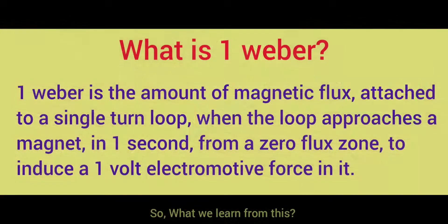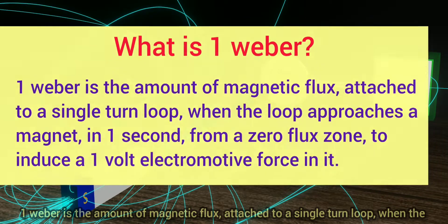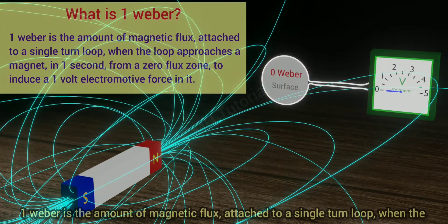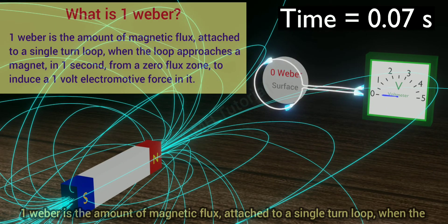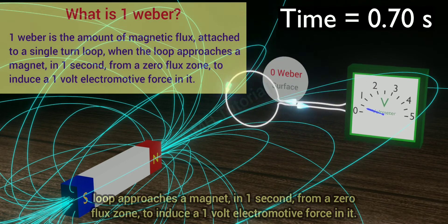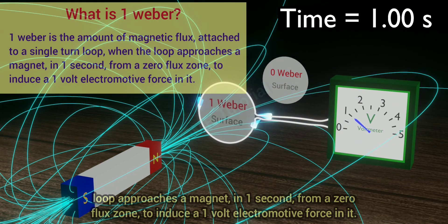So, what we learn from this? One Weber is the amount of magnetic flux attached to a single turn loop, when the loop approaches a magnet in one second from a zero flux zone to induce a one volt electromotive force in it.